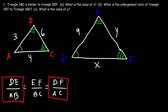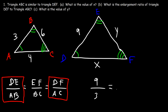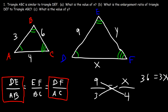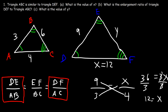DE is 9, AB is 3, DF is x, and AC is 4. Cross-multiplying: 9 times 4 is 36, equal to 3 times x. Dividing both sides by 3, x equals 12.